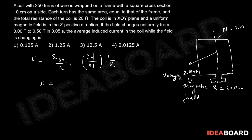And we know that delta phi, so this will become R into delta T. Delta phi will become phi final minus phi initial, and we know the value of phi final which will be N into B2 into A minus N into B1 into A.